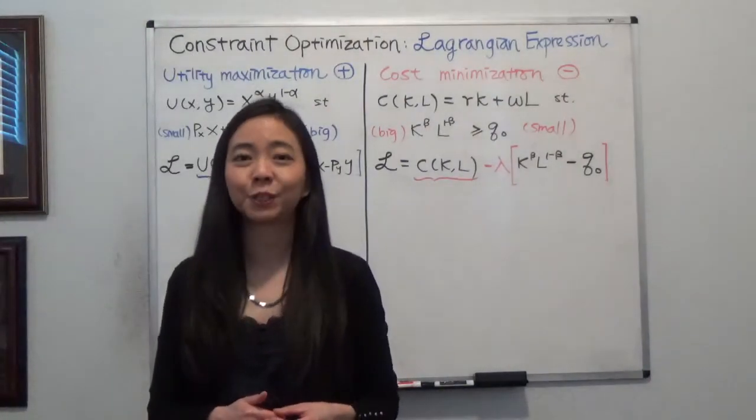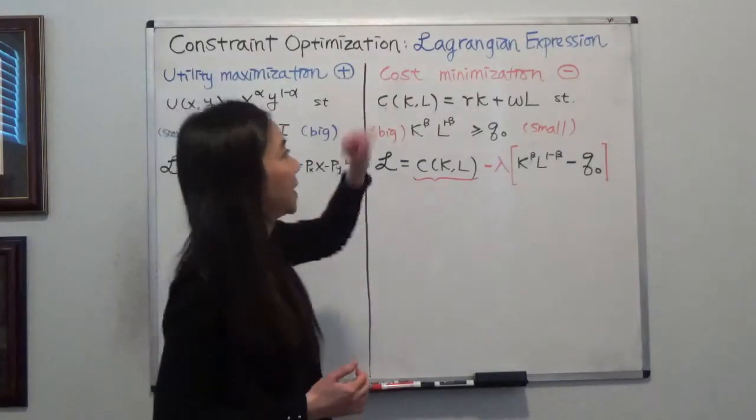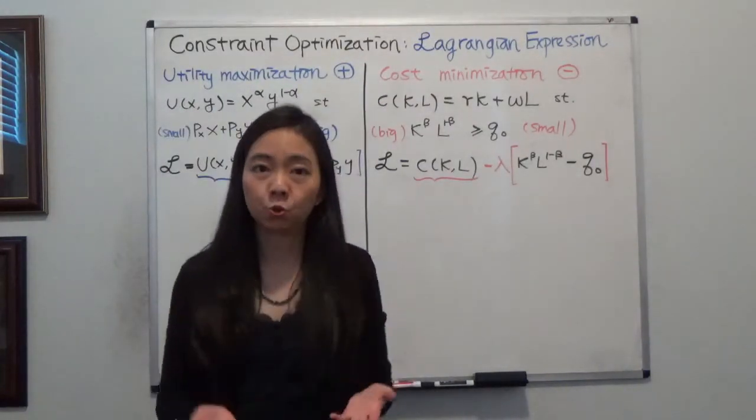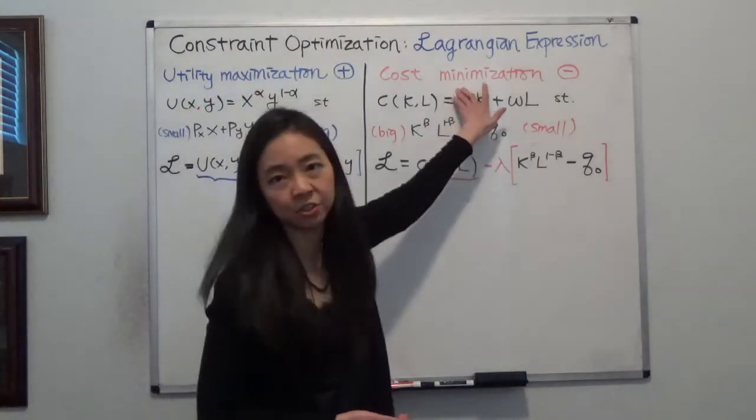Hello everyone, my name is Iris Franz. Today we're going to talk about the difference of Lagrangian expression between constraint maximization and constraint minimization.